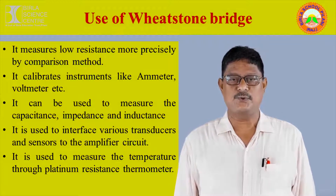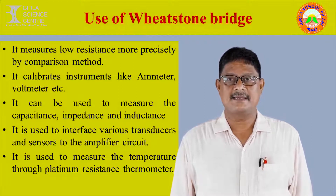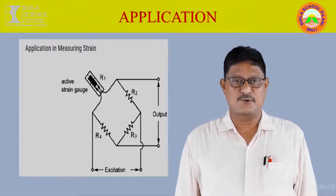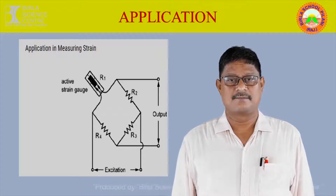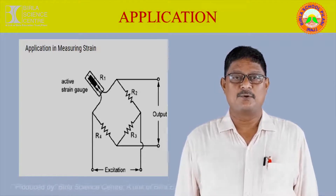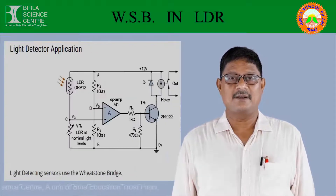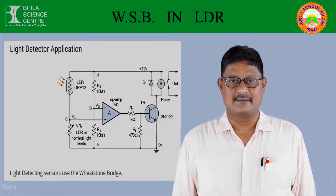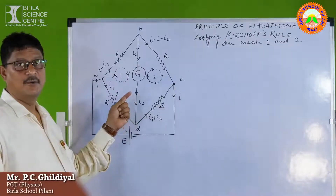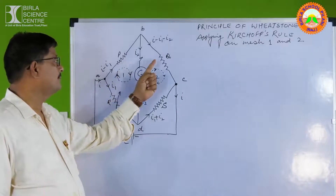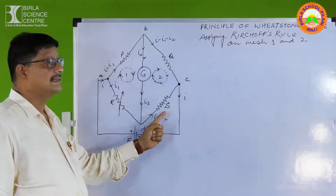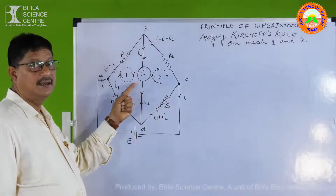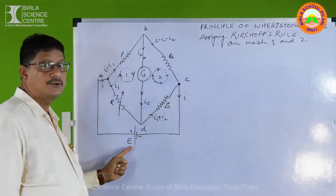It is also used to measure temperature through a platinum resistance thermometer. This diagram shows that one arm of the Wheatstone Bridge consists of an active strain gauge, and this Wheatstone Bridge is used to measure strain. This particular circuit diagram also includes a Wheatstone Bridge used as a light detector. This was the primary circuit of the Wheatstone Bridge consisting of four resistances on the arms of the quadrilateral PQRS, with a galvanometer across one diagonal and a source of EMF across the other.